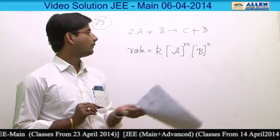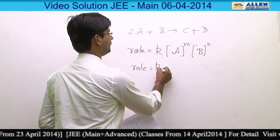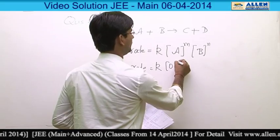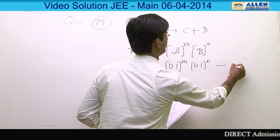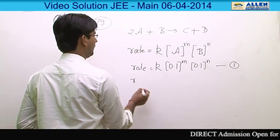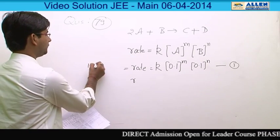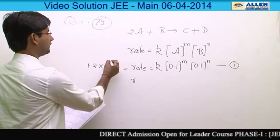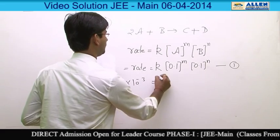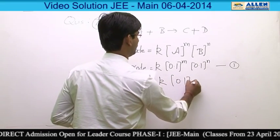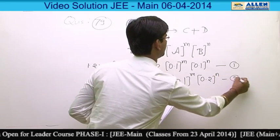According to the given data, if we substitute into this equation, the first equation gives: rate equals K into 0.1 to the power M, into 0.1 to the power N, and the rate of reaction based on this concentration is 1.2 into 10 to the power minus 3. In the second data, rate of reaction is 1.2 into 10 to the power minus 3, equal to K into concentration of A to the power M, into concentration of B to the power N. This is the second equation.